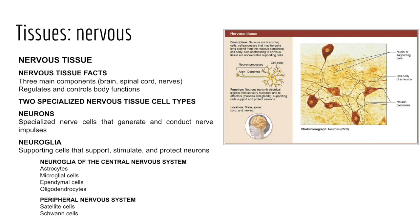Nervous tissue consists of two cell types. First, neurons or nerve cells are specialized cells responsible for generating and conducting nerve impulses, called action potentials. Neurons are sensitive to stimuli, converting a stimulus into an action potential and conducting it to the brain for processing. Second, we have neuroglia, or glial cells — supporting cells that early histologists called the 'glue' holding nervous tissue together, but which we now know have various nuanced supporting functions.